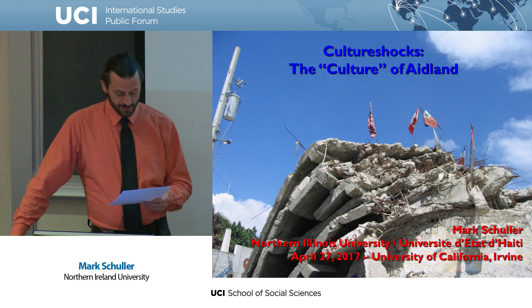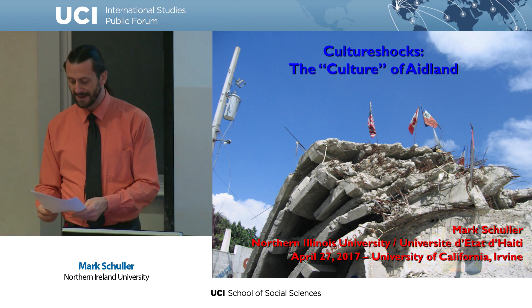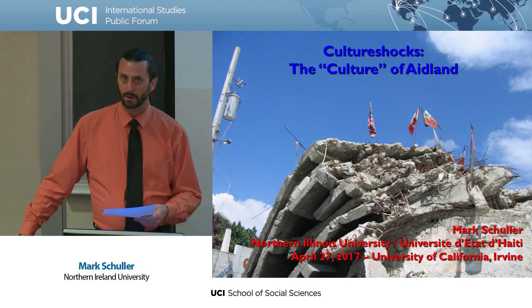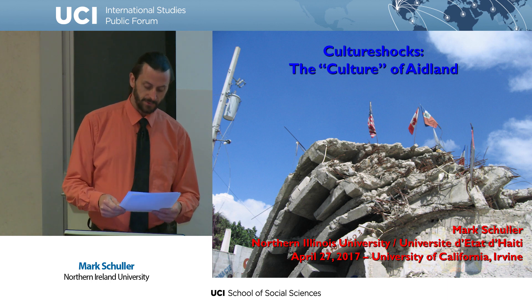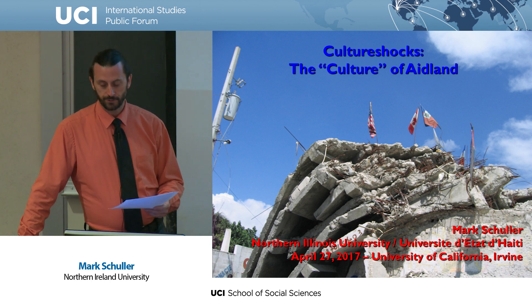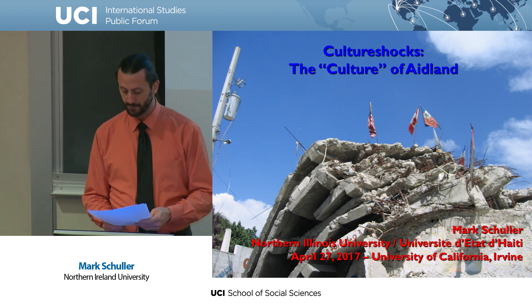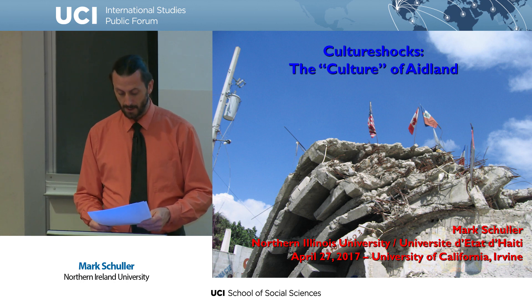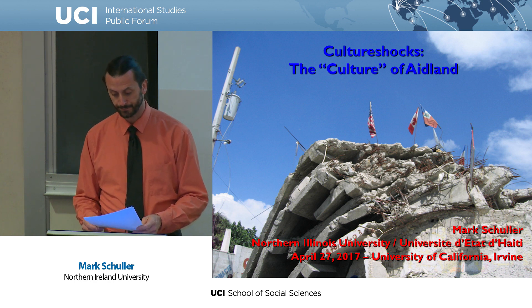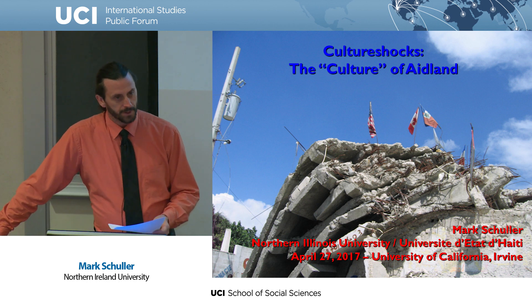Looking back at the $16 billion aid response, one can question whether Haiti represents the Waterloo of the NGO system, if not Clintonist internationalism anchored in public-private partnerships. The $16 billion question is usually posed as 'where did the money go?' However, we must also ask 'what did the money do?' and interrogate the secondary damage that humanitarian aid caused — what can be called humanitarian aftershocks. Missing from the discussion is the political and social context, the inequalities and reward structures that got in the way of do-gooding.